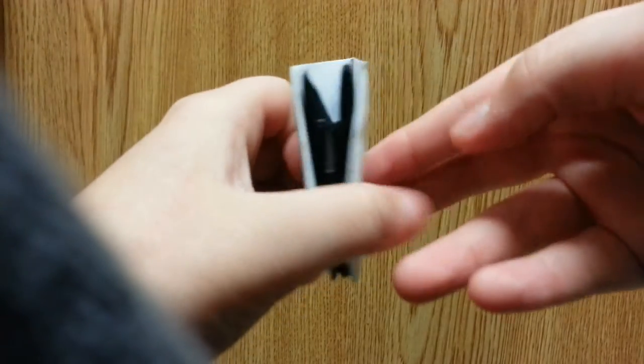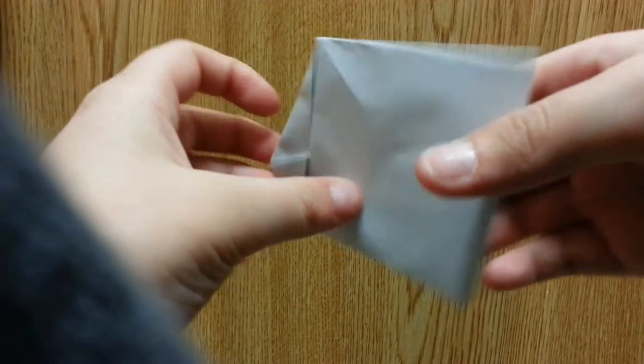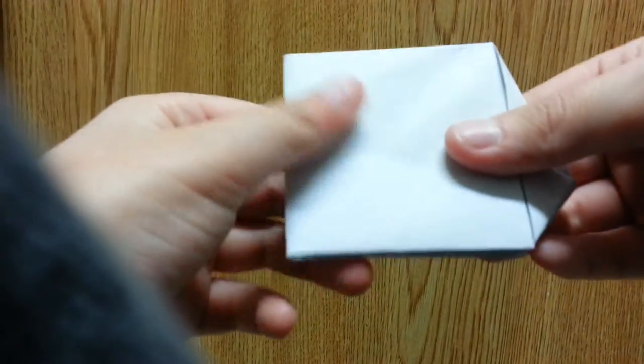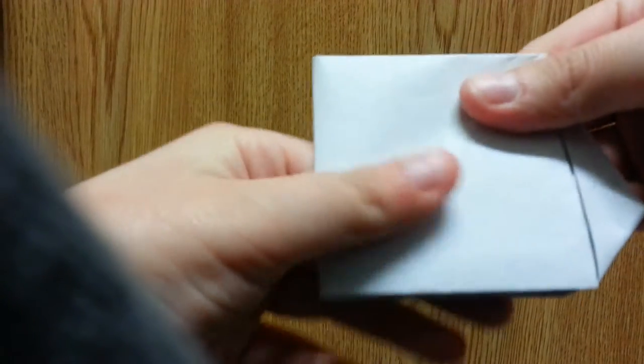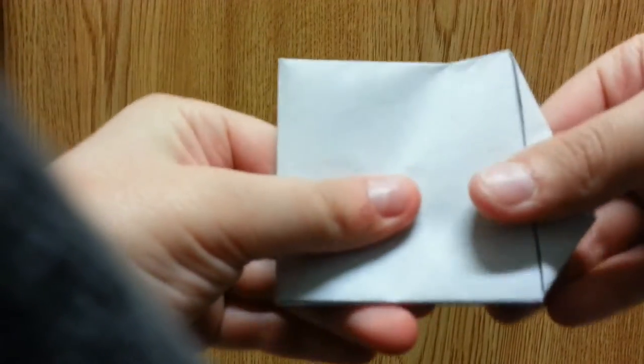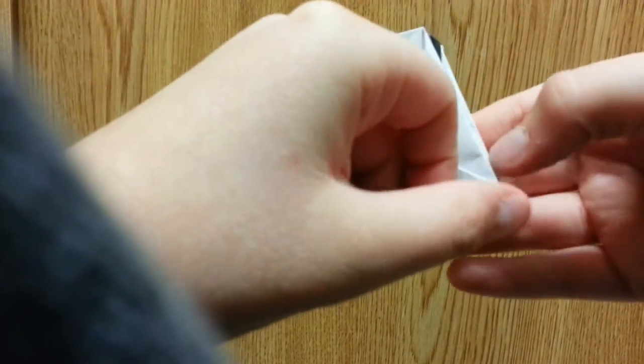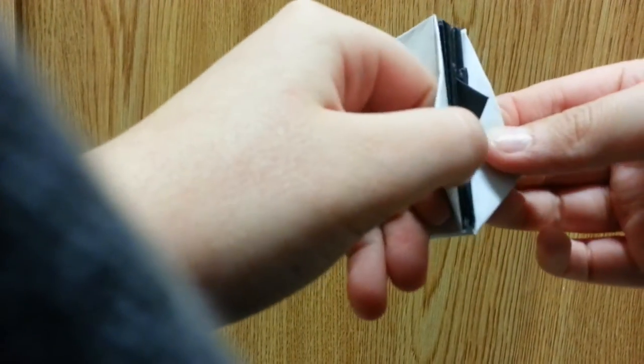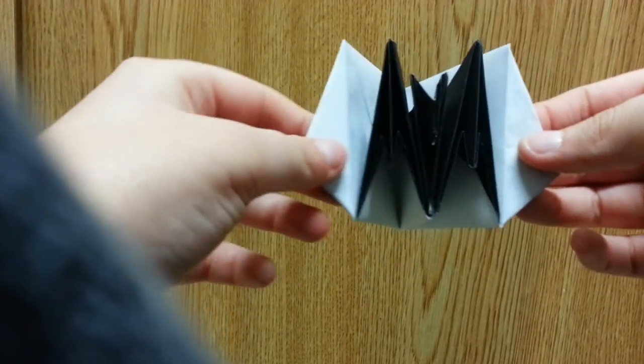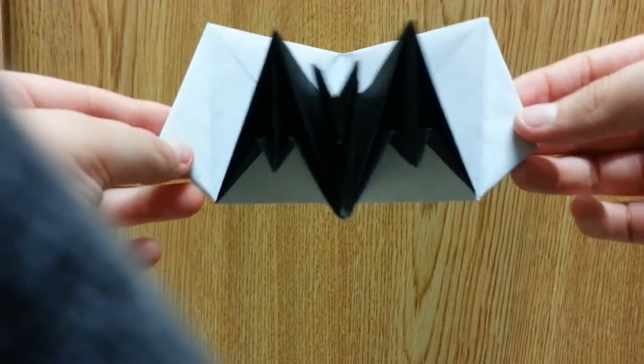Here's just the card. I fold this model from a 10-inch sheet of Kami, which I found at Daiso. So there it is. You just hold these flaps here and open it up, and there's the bat.